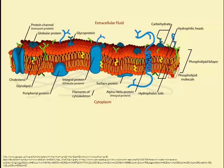Cholesterol prevents the cell membrane from disintegrating at higher temperatures. At lower temperatures, cholesterol prevents close packing of phospholipids, because if they pack too tightly, diffusion of materials like carbon dioxide and oxygen — which normally float through easily — would be impaired.